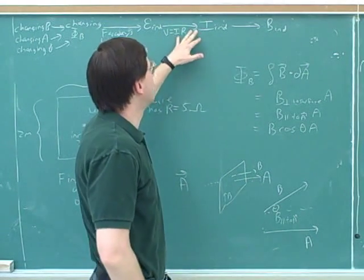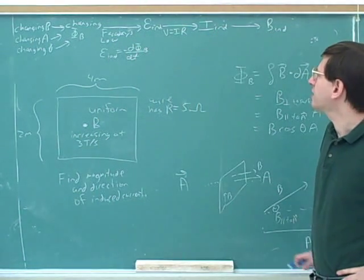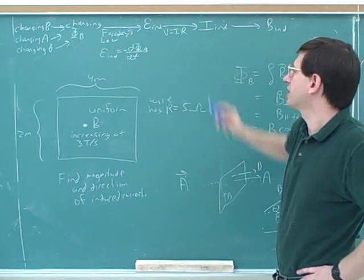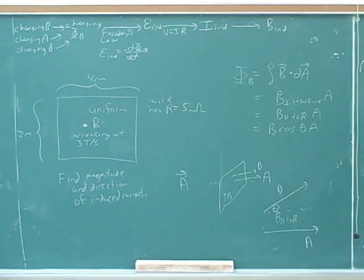And then we know that currents create magnetic fields. How can we figure out the direction of the magnetic field and the direction of the current, and even say the direction of the electromagnetic force, I mean the electromotive force?